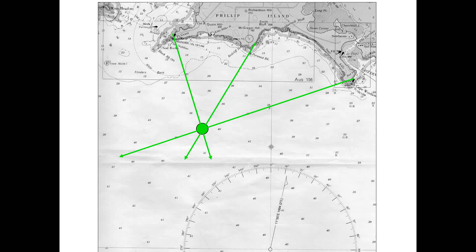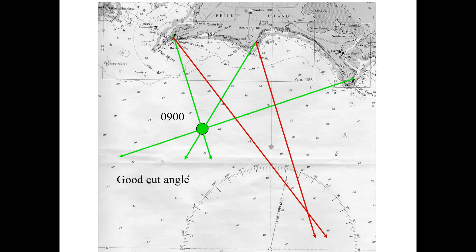This gives you a vessel's fixed position, denoted by a circle. An example of a bad cut of a position line is when the objects are not located as wide apart as they should be, so the angle of cut is not good. For example, if you have three bearing lines where the objects are not widely located, these three red position lines do not give a good angle of cut.